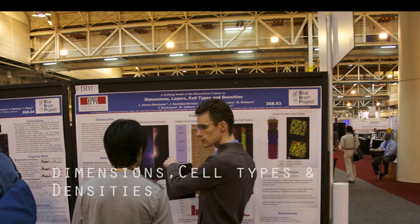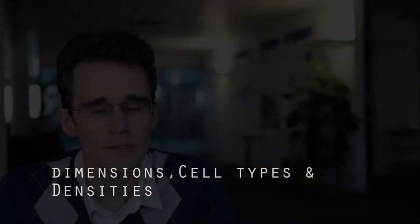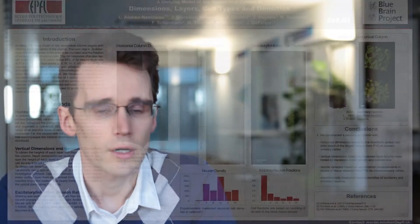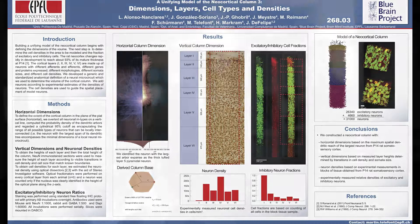The composition of the cortical column — the cell densities, layers, cell types, and the distributions of them really in the cortical column. On this poster we show what data sets we actually use to come up with the composition of the cortical column in these aspects.